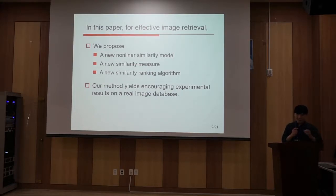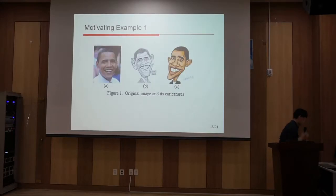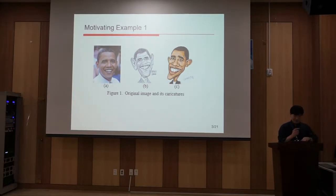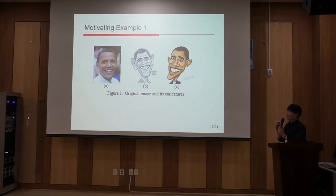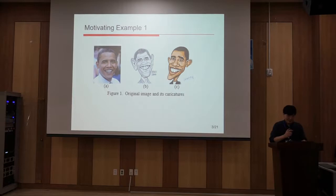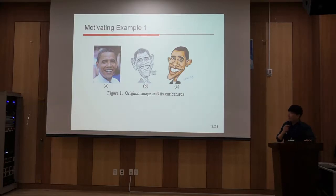Our message is encouraging experimental research for real image databases. In the first motivating example, the first image is the previous U.S. President Barack Obama. Humans can recognize that the second and third images are also Barack Obama, but the computer cannot understand they are the same person. If we use a standard similarity measure such as Euclidean distance, figures B and C may not exhibit their similarity even if humans can perceive it.